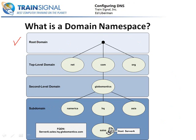So we start off at the top here with the root domain, which is simply a dot. There's something on the DNS server called root hints, which is pretty much where a DNS server is pointed to the root DNS servers out on the internet. Under that dot, or to the left of the dot in a name, would then be the top level domain. The top level domains are your dot nets, dot coms, dot orgs, dot info, dot gov, dot edu — there's a number of them. Those are your top level domains. Then we move further down through the tree into our second level domain, and that would typically be the name of a company. Our example here is GlobalMantics.